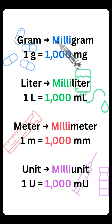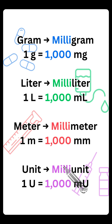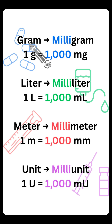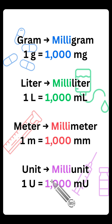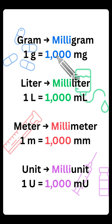But here's the secret. Anytime you put the word milli in front of that base — whether it be gram, liter, meter, or unit — that represents 1,000 of whatever it is you're talking about.